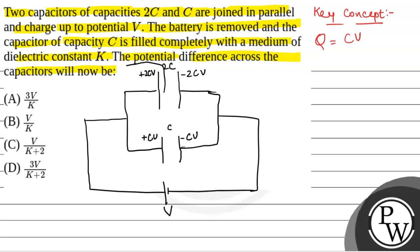The net charge stored on the capacitor Q will be given by Q1 plus Q2. This is Q will be given by Q1 plus Q2.